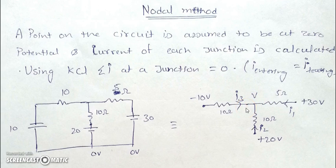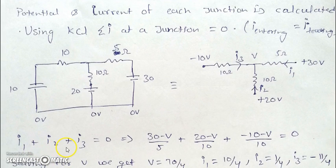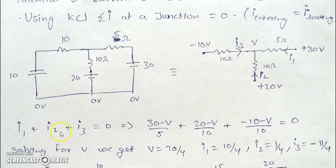We assume V is the smallest of the three potentials. Since current flows in the direction of decreasing potential and V is smallest, all currents will converge at this point. Since no current is leaving the junction, the sum of currents I1, I2, and I3 entering the junction must be zero. This amount of current enters and zero leaves, so I1 + I2 + I3 = 0.